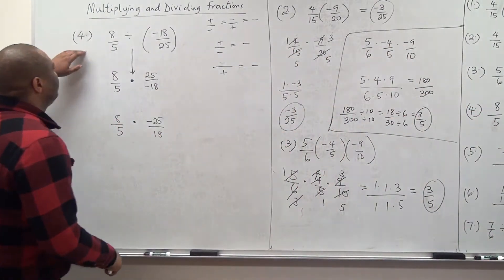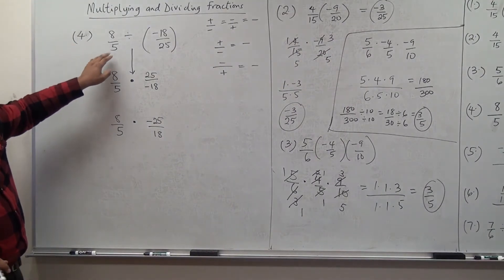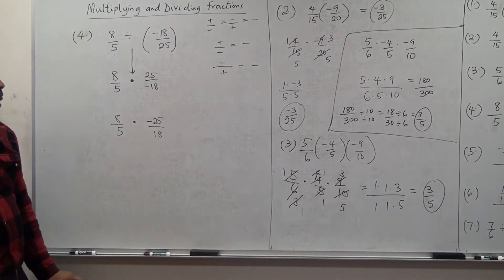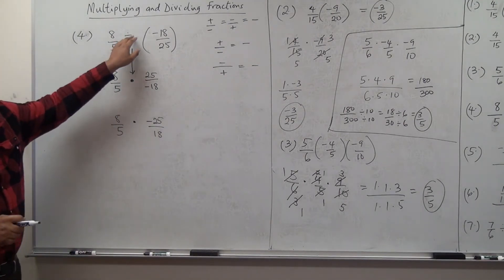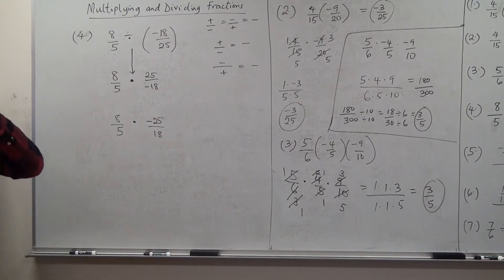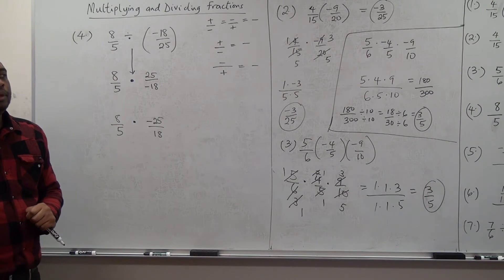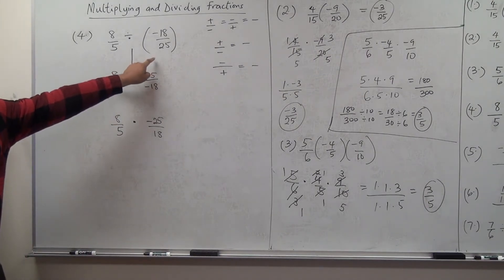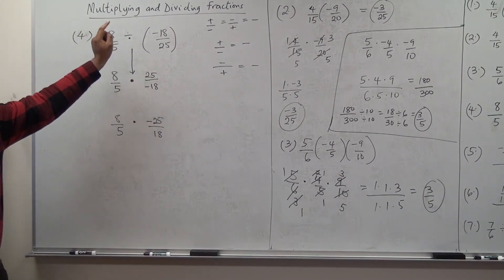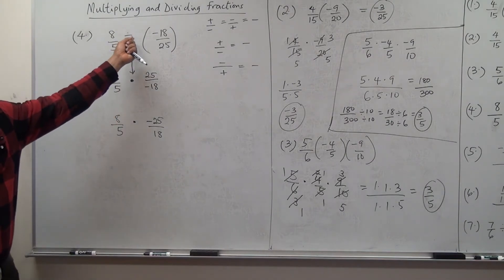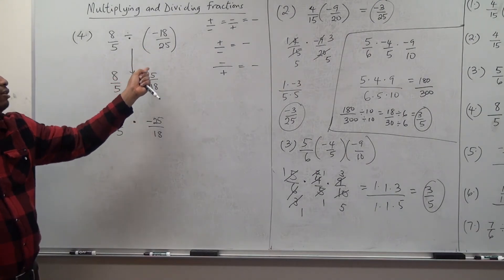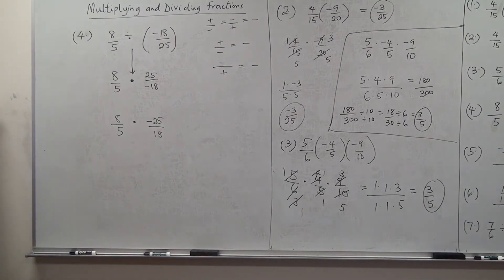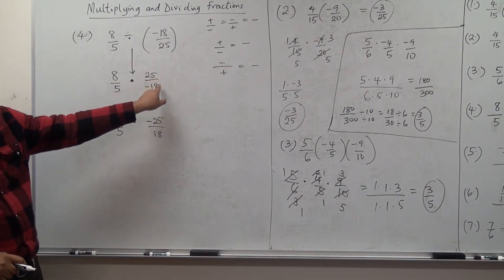Now, Number 4 is the division problem: 8 over 5 divided by negative 18 over 25. When you have a division of fractions, all you need to do is convert the division to multiplication. In so doing, find the reciprocal of the second fraction. Write the first fraction down, convert the division sign into multiplication, and flip the second fraction — find its reciprocal. So the reciprocal of negative 18 over 25 gives you 25 over negative 18.